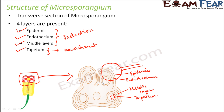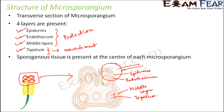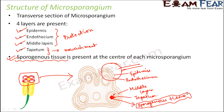Inside the microsporangium, at the center of each microsporangium, we have a specialized tissue called sporogenous tissue. This sporogenous tissue is present at the center of the microsporangium. The spores are actually produced by this sporogenous tissue. The question is how the sporogenous tissue gives rise to the male gamete — that process we are yet to understand.